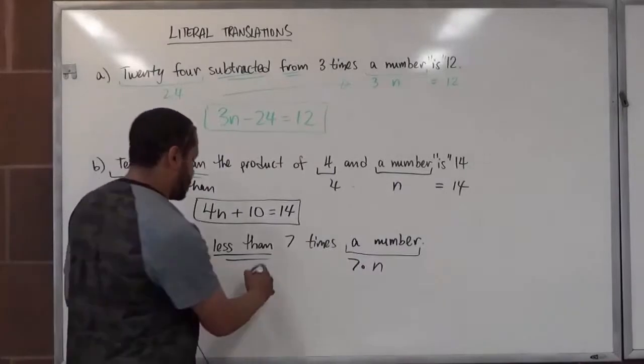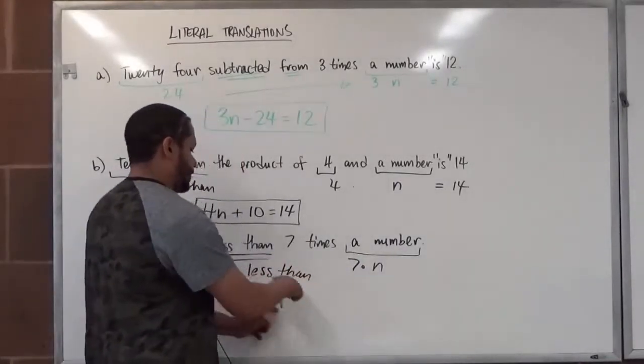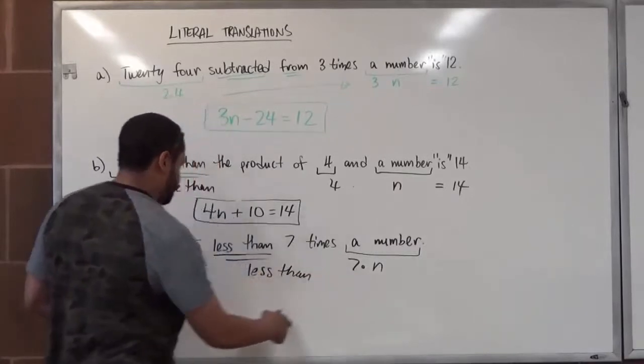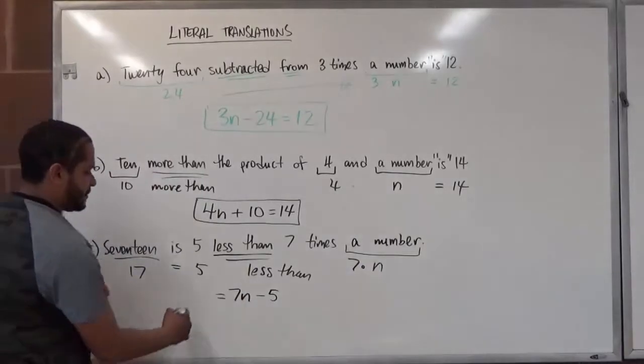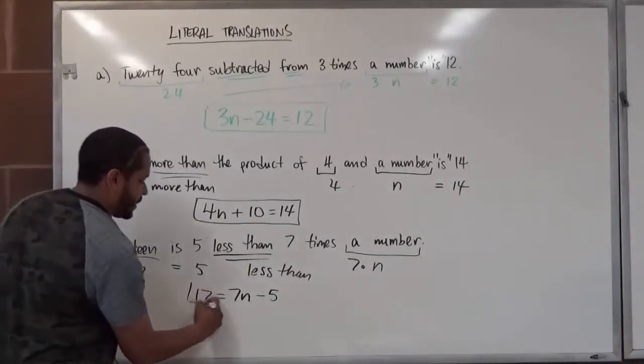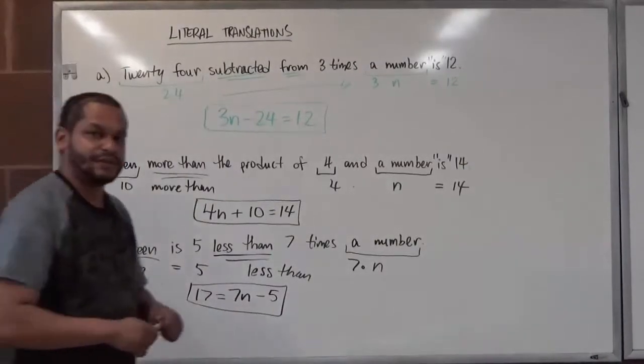And so, since we have the 'less than' term right here, we're going to swap the two on the left and right of the 'less than,' and it's going to become 7n minus 5, and the 17 is going to be the beginning of this. So, we have 17 equals 7n minus 5. Thank you.